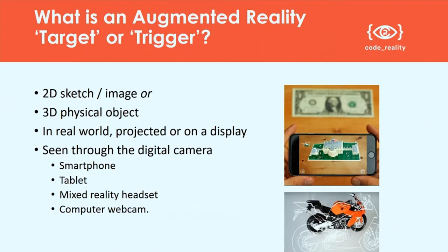Most of you, if you haven't already had an experience of it, will find that it's typically a 2D sketch, photograph, or image. Someone can just draw something on a piece of paper and that could potentially trigger an AR experience through a smart device. It could be projected on a screen, or displayed on a mobile phone. The display could be on a smartphone, a tablet, and it's something that could be captured through a mixed reality headset or a computer webcam — all of those things could be the input mechanism to look at the target and generate an augmented reality experience.